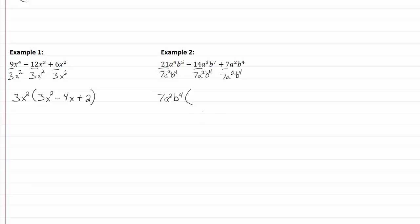Set up my parentheses to write my leftovers in. Twenty one divided by seven is going to be three. A to the fourth divided by a squared is a squared, b to the fifth divided by b to the fourth is going to be b. Always keep in mind we're subtracting the exponents. Fourteen divided by seven is going to be two, a cubed divided by a squared is a, b to the seventh divided by b to the fourth is going to be b cubed.